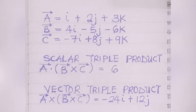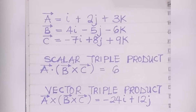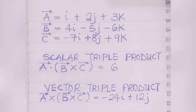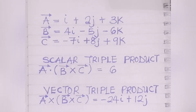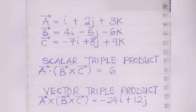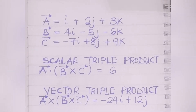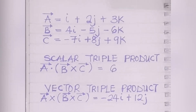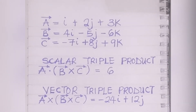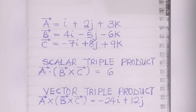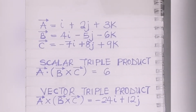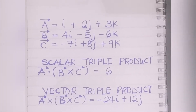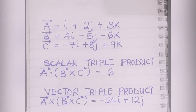To do vector triple products and scalar triple products we must have three vectors. Here we've defined vector A equal to i + 2j + 3k, vector B equal to 4i - 5j - 6k, and vector C equal to -3i + 8j + 9k. After solving, our scalar triple product A·(B×C) is equal to 6.